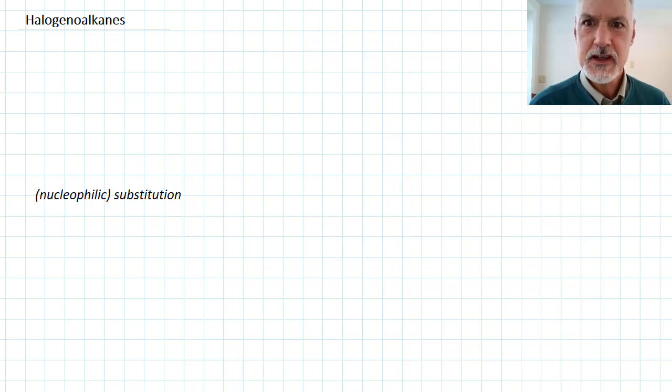Hi again. Much like the alcohols, halogenoalkanes also come in various varieties. So let's quickly take a look at the structure of some.